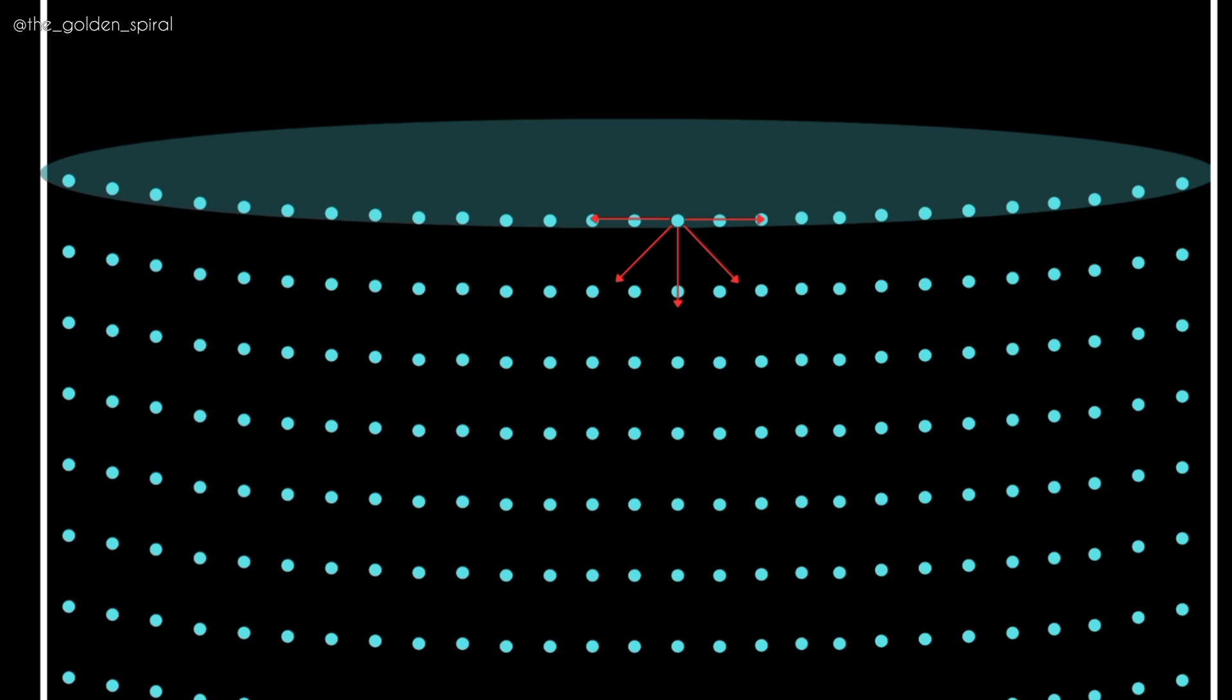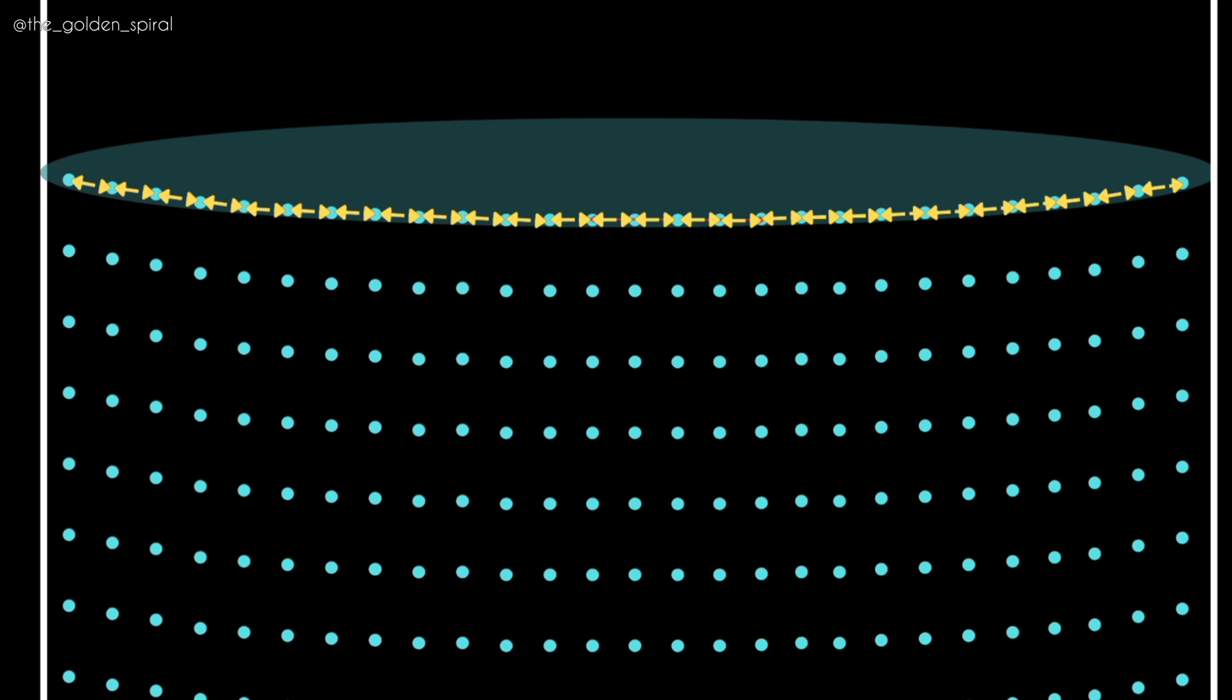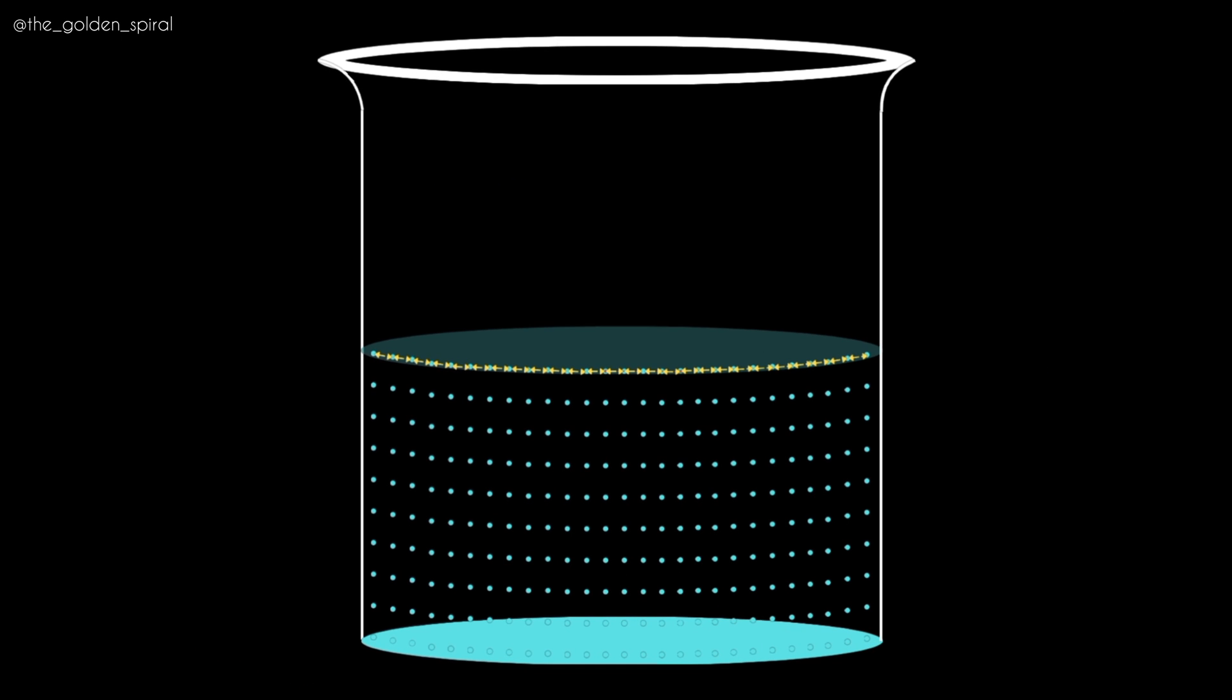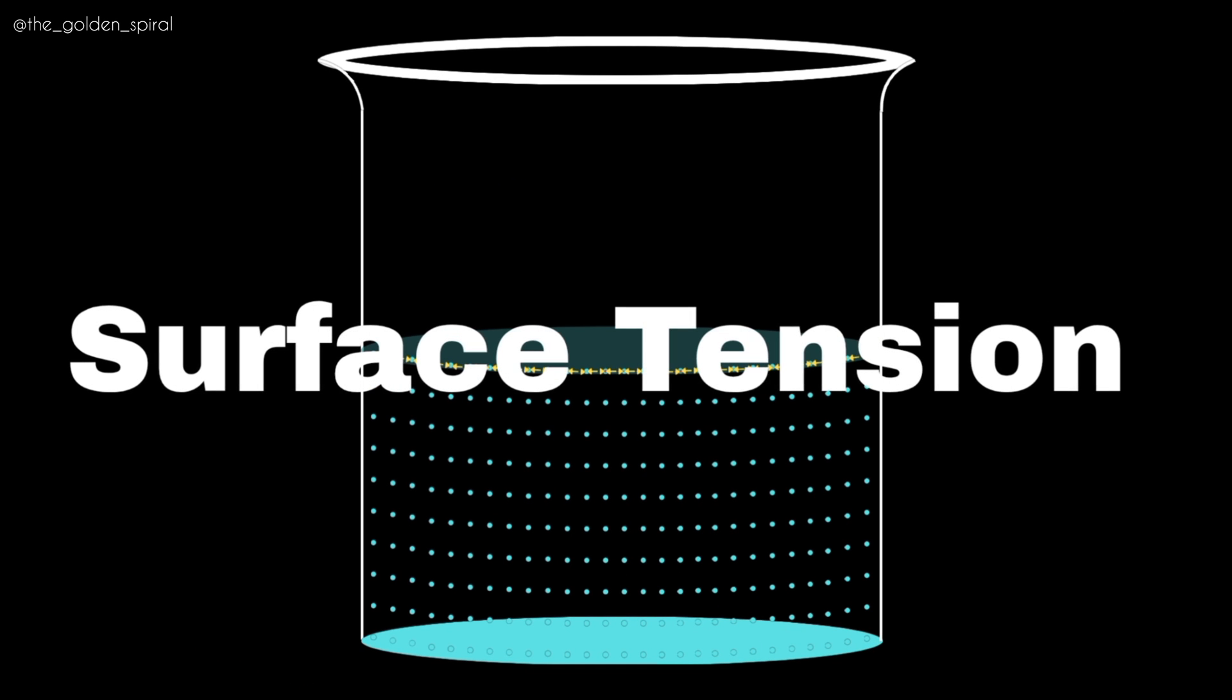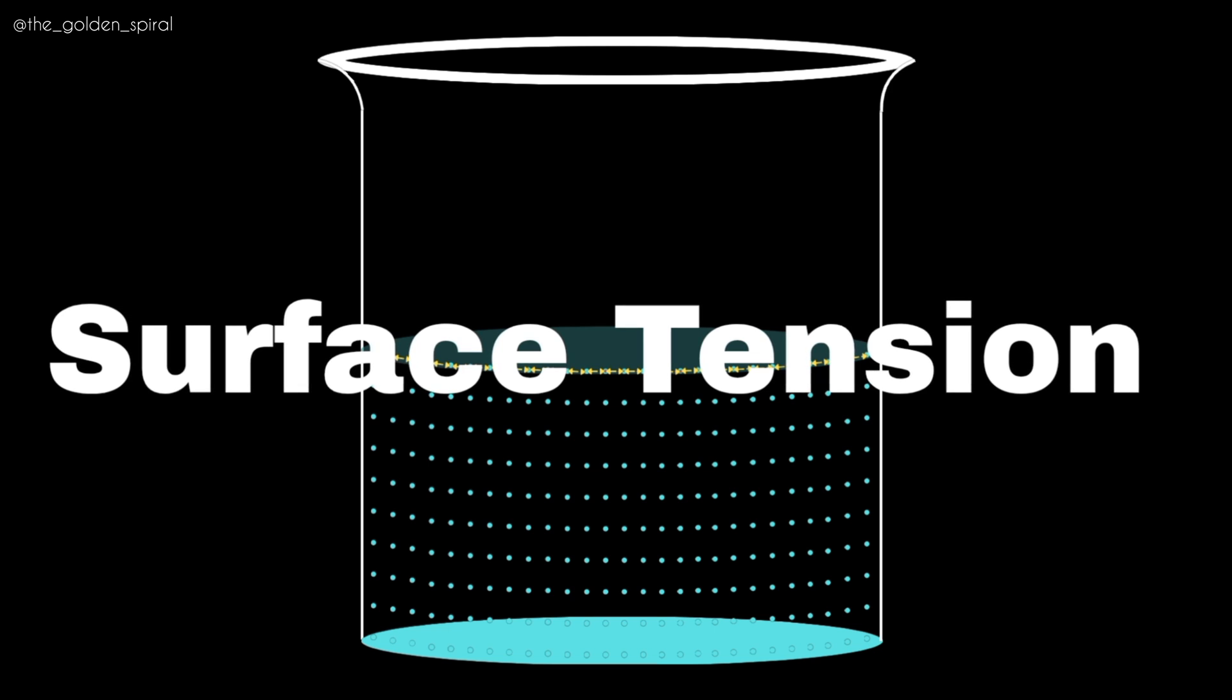This imbalance of forces causes the outer layer of the liquid to act as a stressed membrane that holds the water in minimum possible space, what we know as the surface tension. It tries to minimize the surface energy of the liquid.